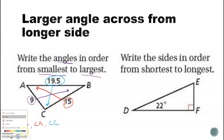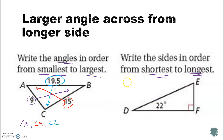If I give you angles, you can also order the sides. In this case, order the sides from shortest to longest. Notice angle E is missing, so we do a little math: 180 minus 90 degrees at angle F minus 22 degrees at angle D gives us 68 degrees for angle E. Now you have all your information.